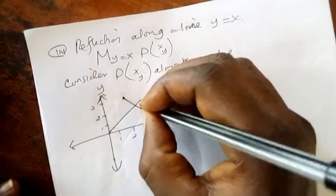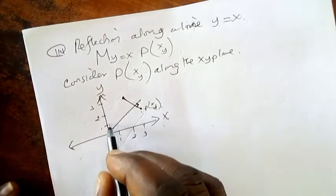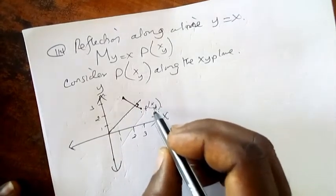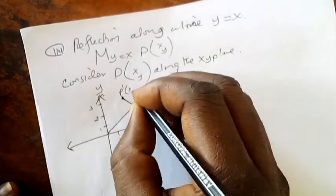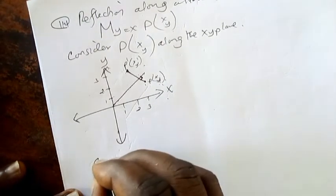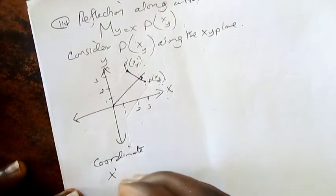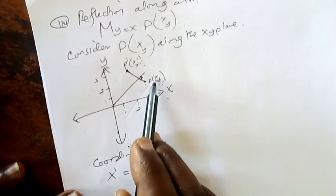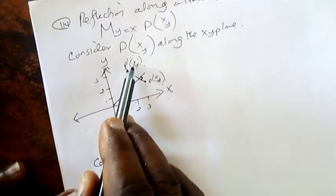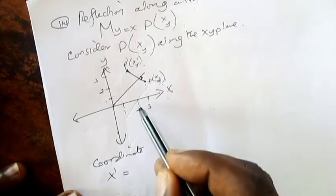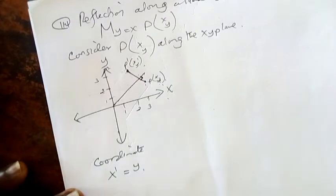So the point will become like this - it will be P' (x', y'). This will be the image. Now let's find the coordinates we get. Starting with x': originally x was 3, but now x' when we read it will be 2. But originally 2 was the value of y. So x' will be y.